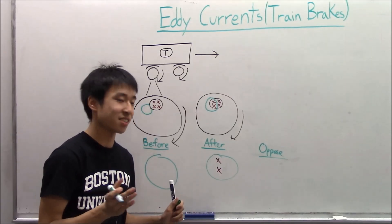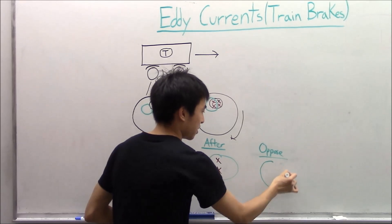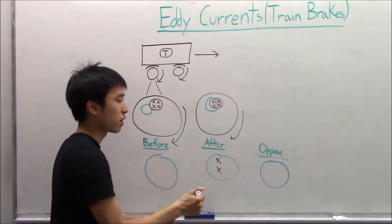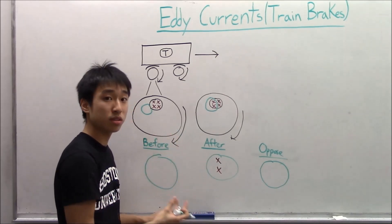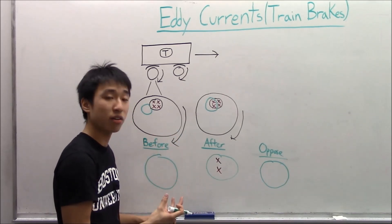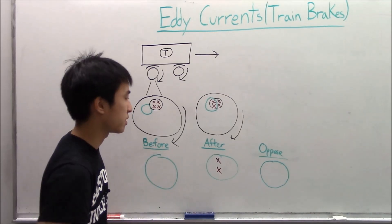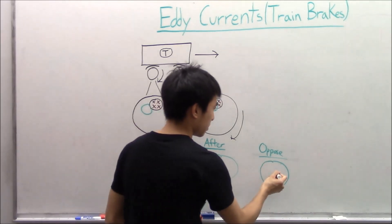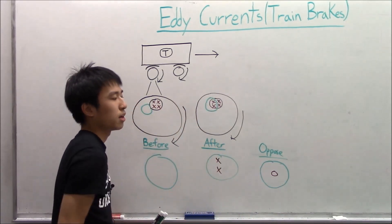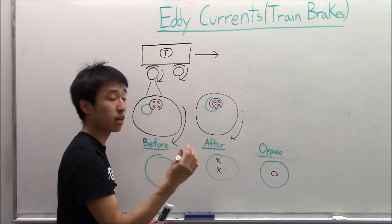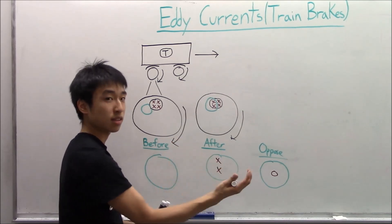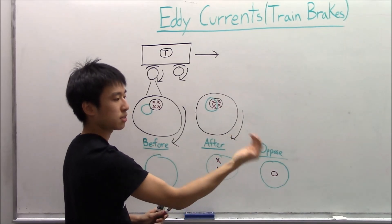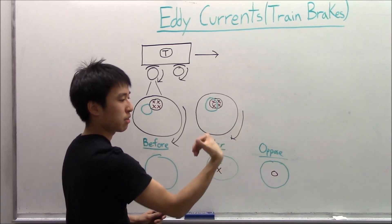Alright, hopefully you guys took a guess. As you can see, afterwards we get more field lines going in, so our induced current must generate a magnetic field that comes out of the board to cancel out the change that occurred. So it has to be out of the board. What direction does the current have to go then? It's counterclockwise because of the right-hand rule — if you want a field line coming out, the current has to curl around this way.